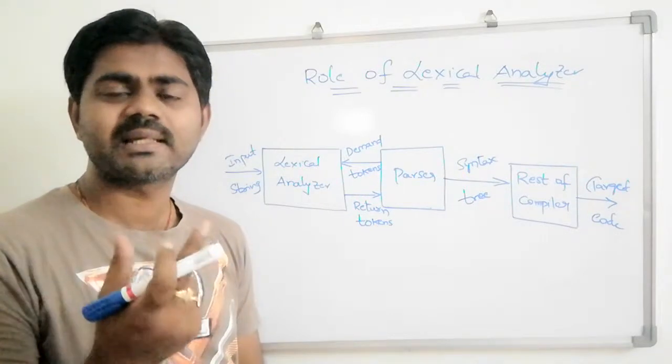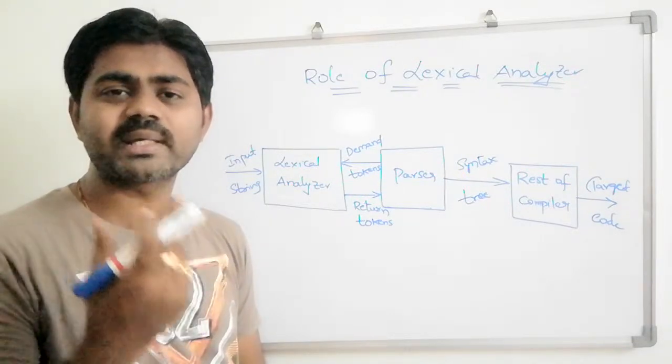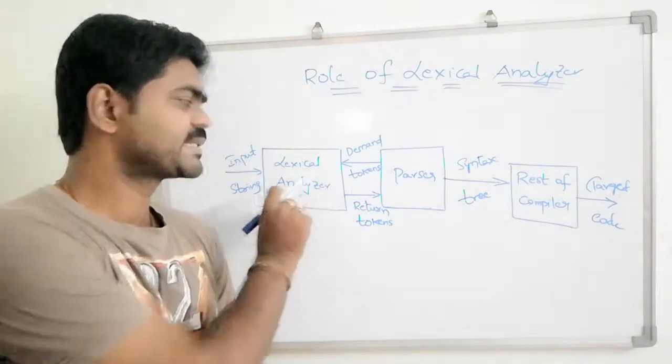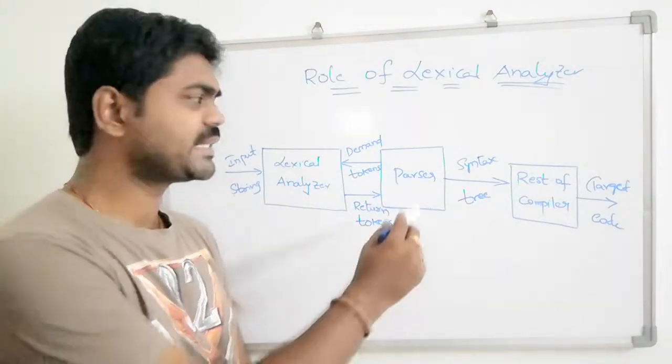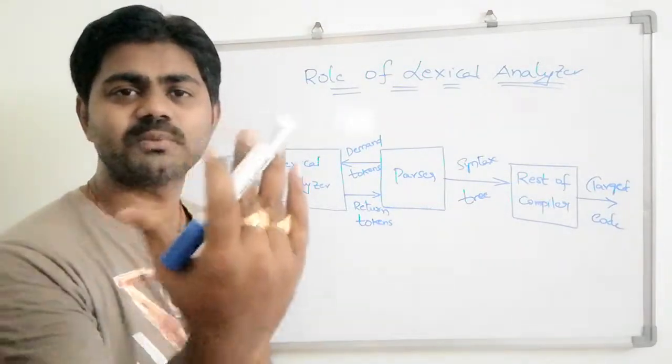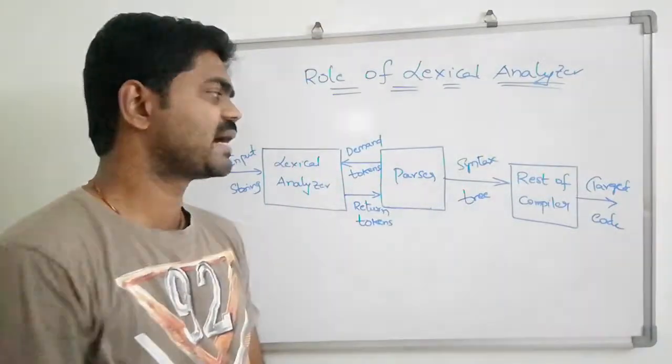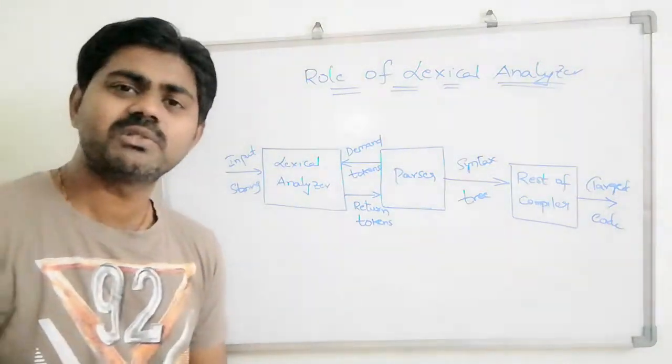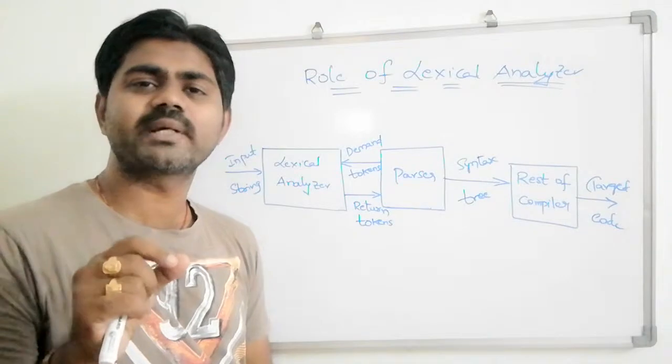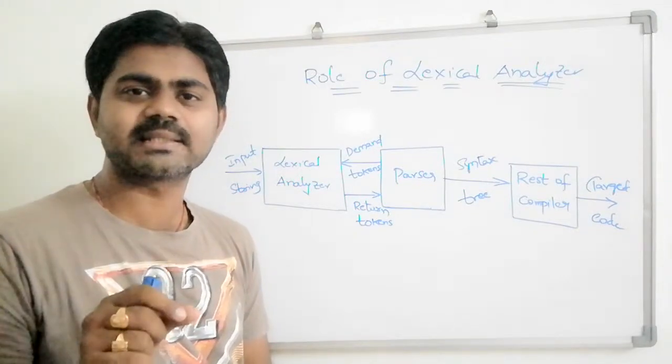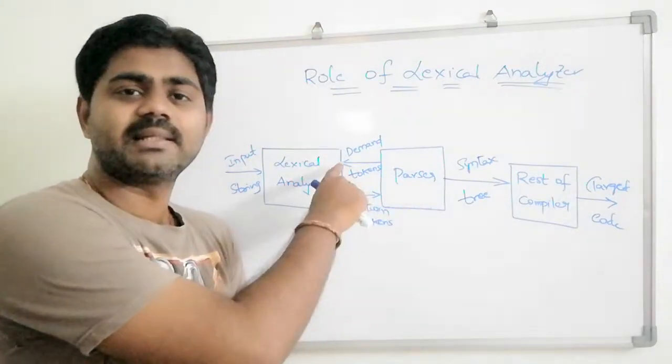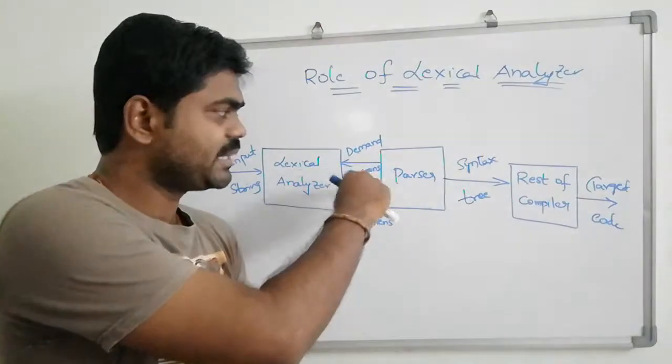The parser always checks whether tokens are generated by the lexical analyzer. Let's go from back to front. The parser demands tokens from the lexical analyzer, as shown by the arrow mark.